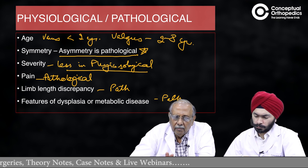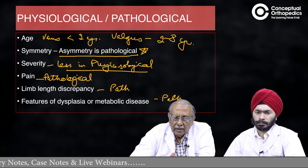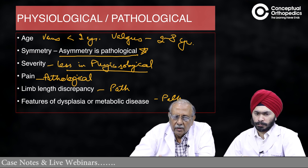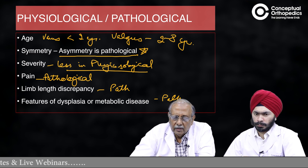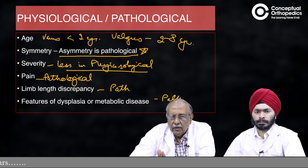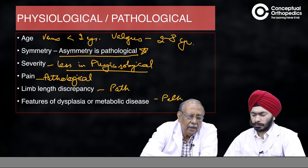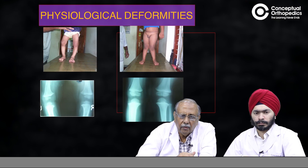The six criteria for distinguishing physiological from pathological deformity are: age group, symmetry, severity, symptoms especially pain, limb length discrepancy, and features of dysplasia or metabolic bone disease — all of which are absent in physiological deformity. On the basis of these criteria, one can easily distinguish between a physiological and pathological deformity.